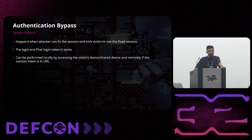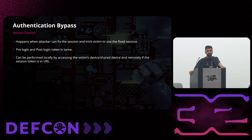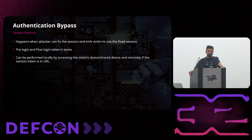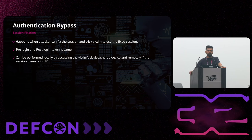The other scenario is when you are working on a shared machine — a machine used by multiple users. What you can do is go to that machine and copy the cookies. Since the pre-login and post-login cookies are the same, you can copy that and whenever your victim logs into the application, you can use that cookie to bypass the authentication using the victim's account.